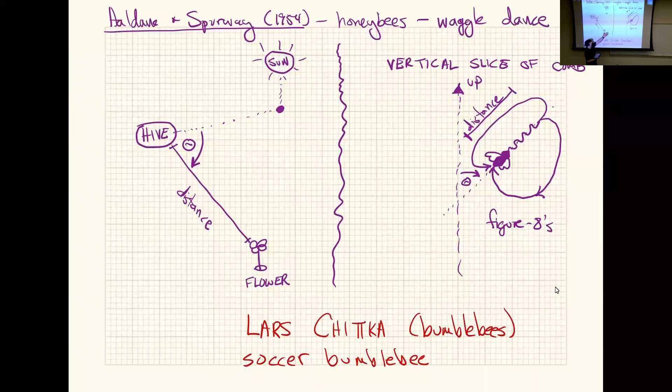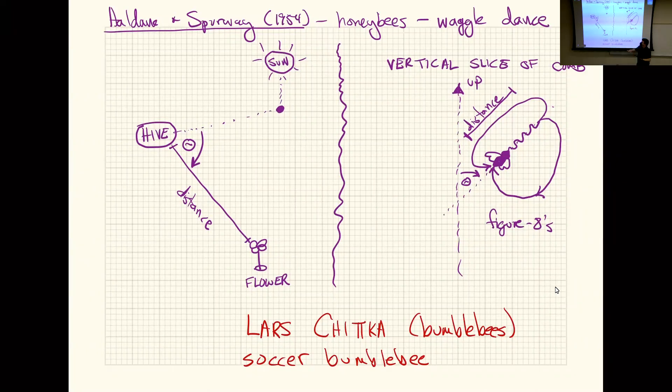This communication skill, the waggle dance, is a phenotype. It is a trait. This is something that has evolved over evolutionary time scale. These bees have it.